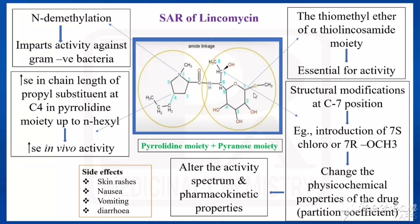In the case of methyl-thio-lincosamine, we have a thio-methyl ether. This thio-methyl ether of the lincosamine moiety is essential for activity, and this would be the 7th position. Structural modifications at C7 position change the physico-chemical properties of the drug — specifically the partition coefficient. An example is the introduction of a 7-S-chloro or 7-R-methoxy group. The example for 7-S-chloro is clindamycin, which alters the activity spectrum and also the pharmacokinetic properties.